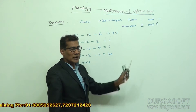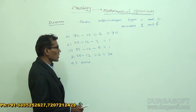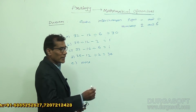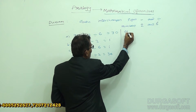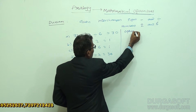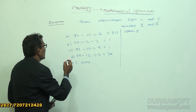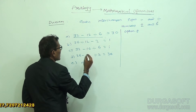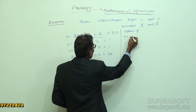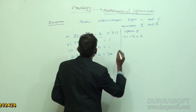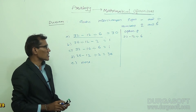We will check the options one by one. We start with option A. Taking option A, we take the LHS part from the equation. It is 32 minus 12 divided by 6. The given expression is 32 minus 12 divided by 6.